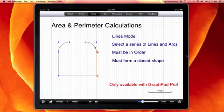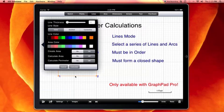Go to line mode, and we select our lines. When we finish selecting our lines and complete our closed shape, we get a menu which allows us to change our line parameters, as well as create our area, and also to calculate our area and perimeter.